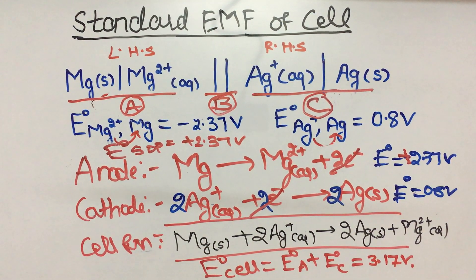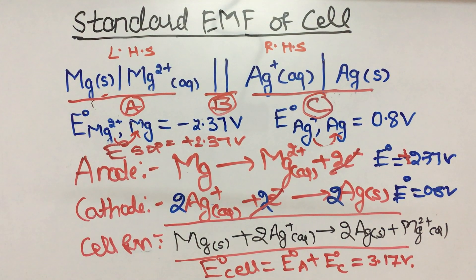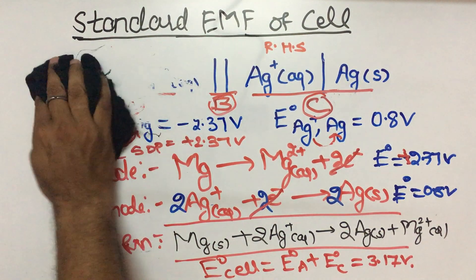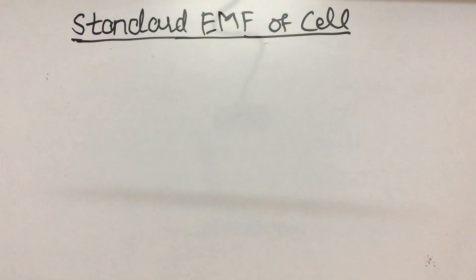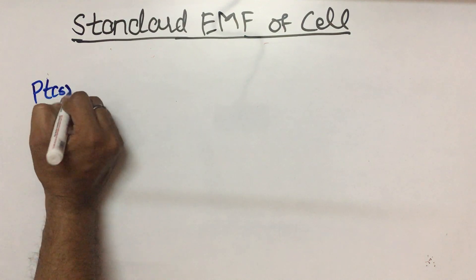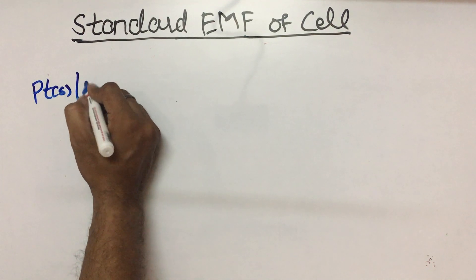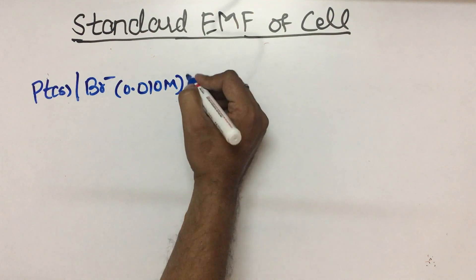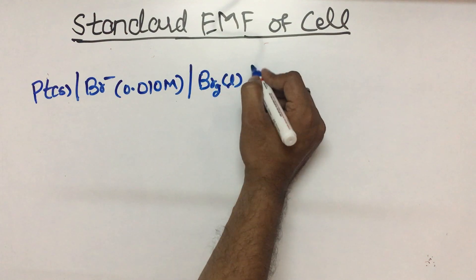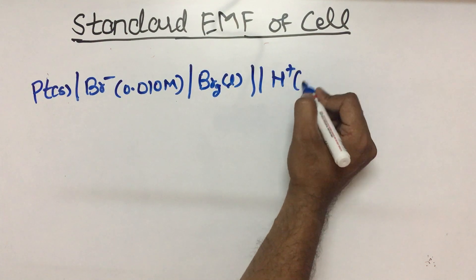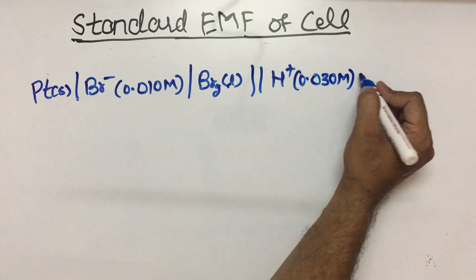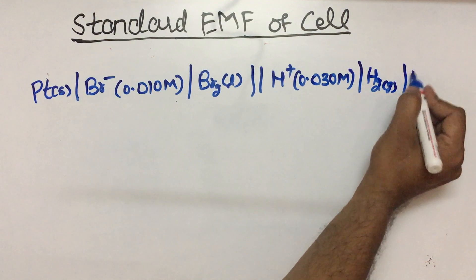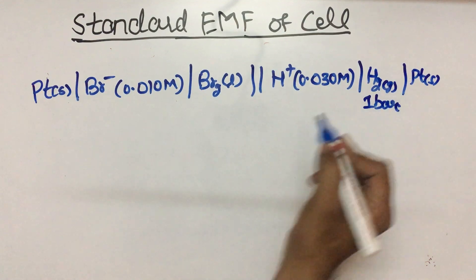Now we will solve an excellent NCERT back exercise question — the 4th question. For this question we need to find the EMF of the cell. The cell representation starts from Pt(s) | Br−(0.0101 M) | Br2(l) || H+(0.030 M) | H2(g, 1 bar) | Pt(s).